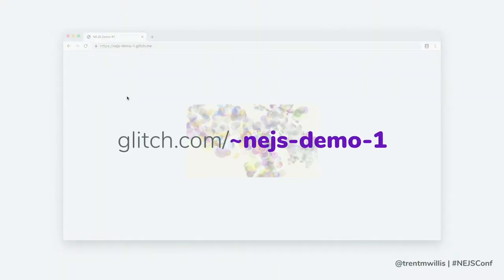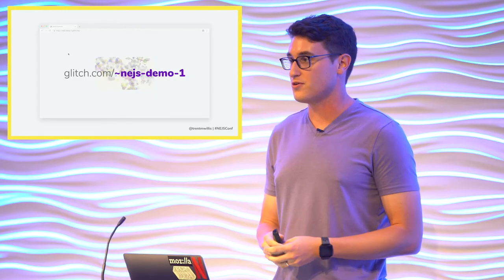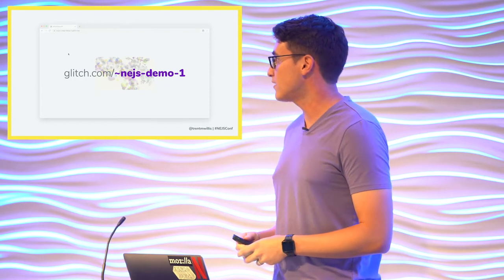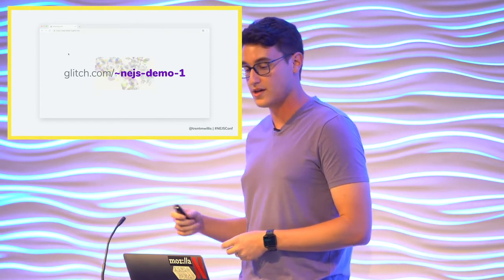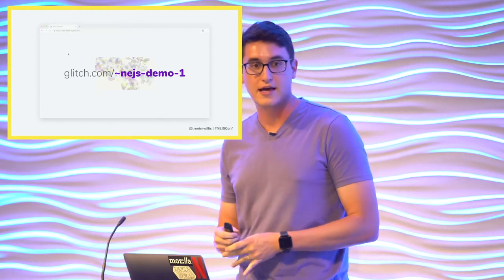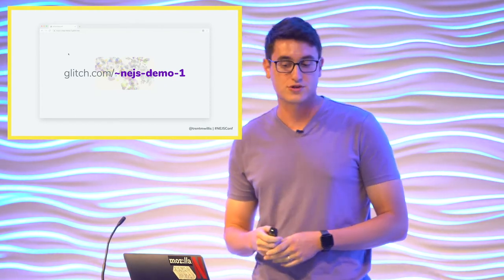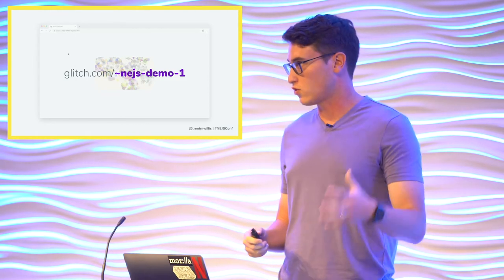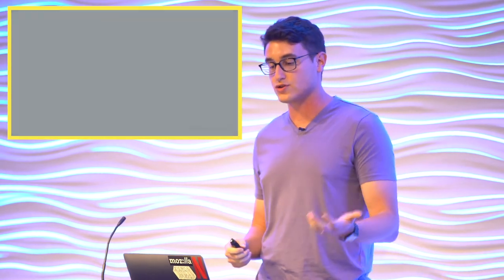You can find this demo online at Glitch — I love Glitch, it's a great way to share ideas, quickly prototype things, and share them with the community to get feedback. You can find it at glitch.com/~nejs-demo-1. We're going to quickly look at how this is made and what the high-level structure of the code is.